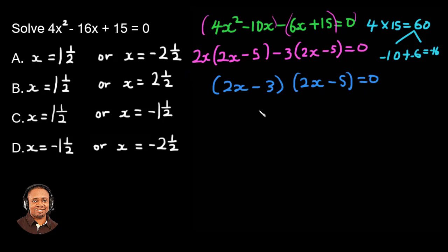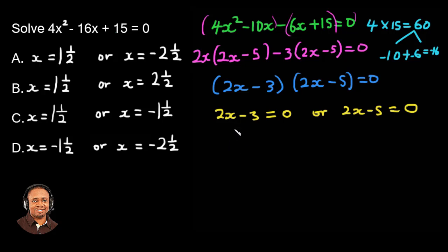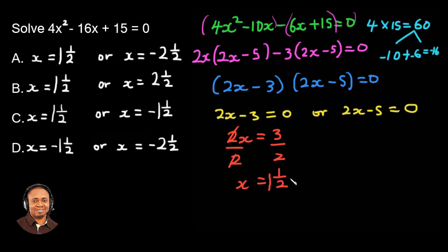We're trying to find the roots of the equation. So we're going to have 2x minus 3 equals 0, or 2x minus 5 equals 0. Each bracket equals zero because we're finding the roots of the equation. So we simplify: the minus 3 moves to the right-hand side, giving us 2x equals 3. Dividing both sides by 2, we get x equals 3 over 2, which is 1 and a half — a mixed fraction.